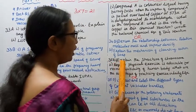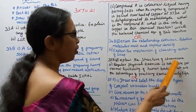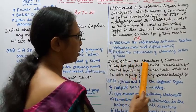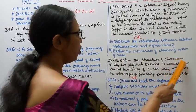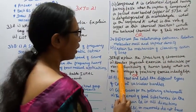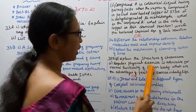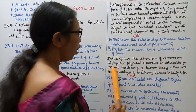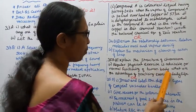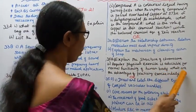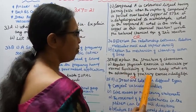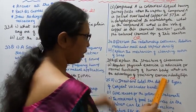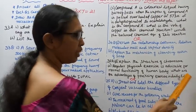Question 35A, first subdivision: Explain the structure of a chromosome. Second subdivision: Regular physical exercise is advisable for the normal functioning of the human body. What are the advantages of practicing exercise in daily life?